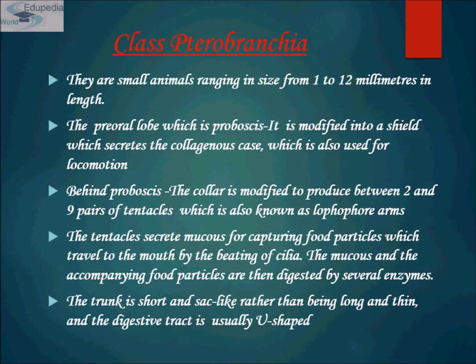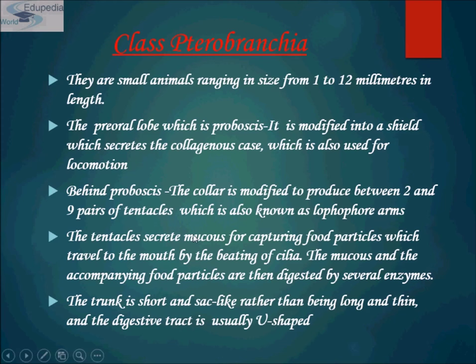In pterobranchia, the pre-oral lobe — the proboscis — is modified into a shield that secretes a collagenous case, also used for locomotion. The collar is modified to produce between one and nine pairs of tentacles, known as lophophore arms. The tentacles secrete mucus, which drives food particles to the mouth by beating cilia. The mucus and incoming particles are then digested by enzymes.